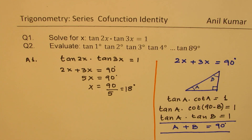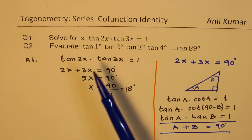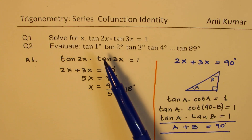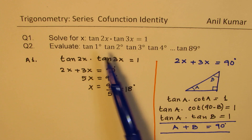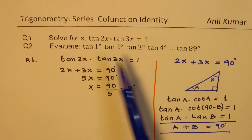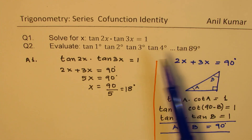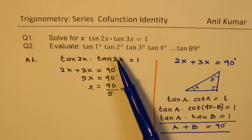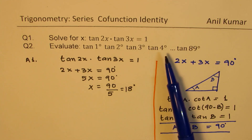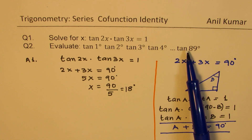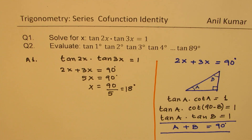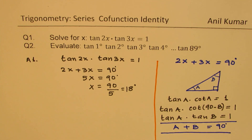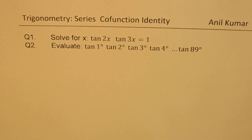So that is the proof for the strategy which we have used. This is a very useful strategy to solve such questions. Now if you look at the second question, you see 1 plus 89 is 90, and 2 plus 88 will be 90, and so their products will be 1. And we know this answer will be 1. So that is how you could answer question number 2.